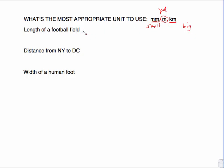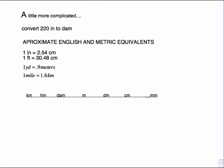So the length of the football field would be best given in meters. The distance from New York to D.C. would be kilometer. And the width of a human foot is millimeters. So there's a couple of those that are pretty easy to identify. Bye-bye.